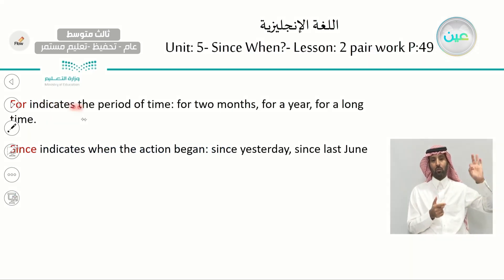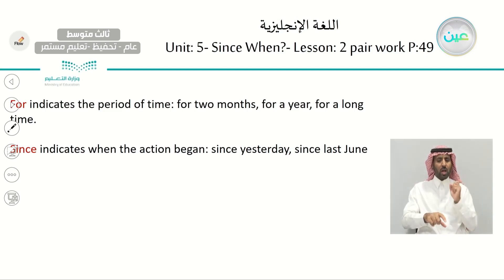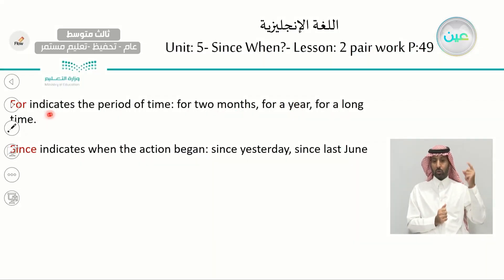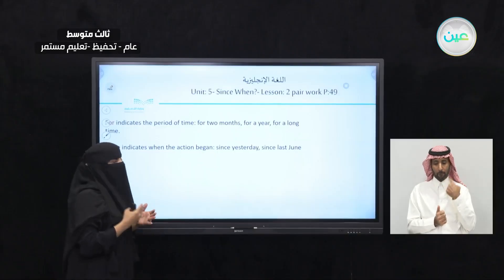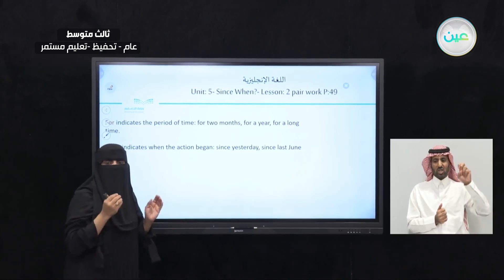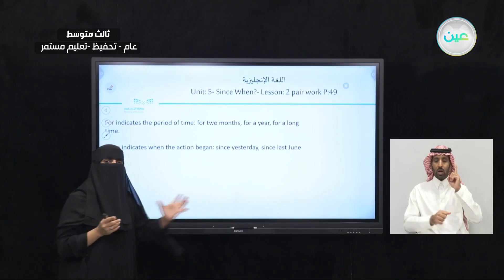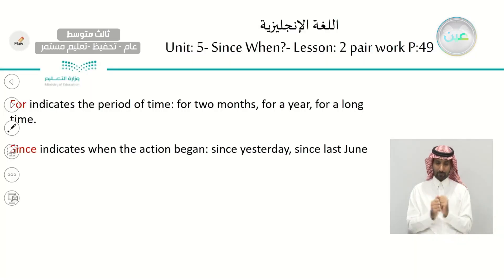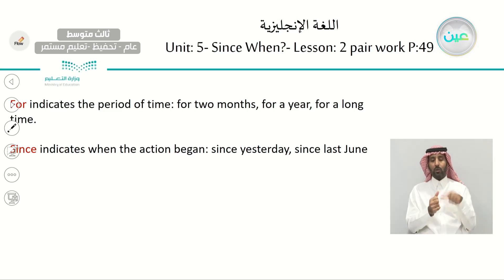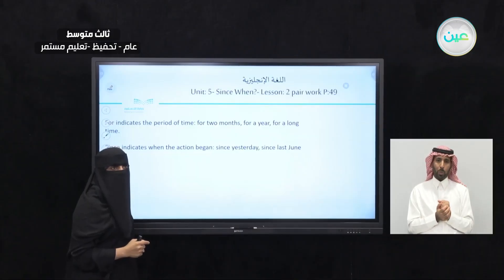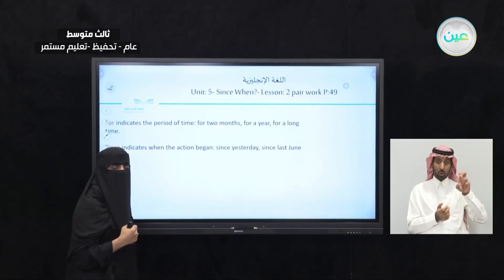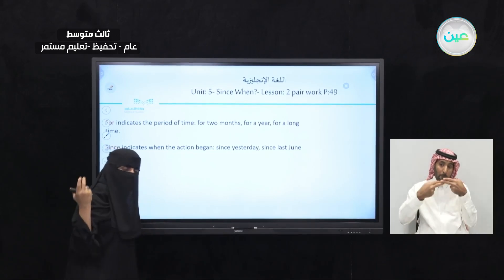We use 'for' to indicate a period of time when talking about duration. I can say: for three days, for three hours, for three months. Examples: for two months, for a year, for a long time. You cannot say 'for 2001' — when you use 'for,' you talk about duration, the length. 'Since' indicates when the action began. Since yesterday, since last June. You can say 'since 2001' because you are indicating that the action started at that specific time.